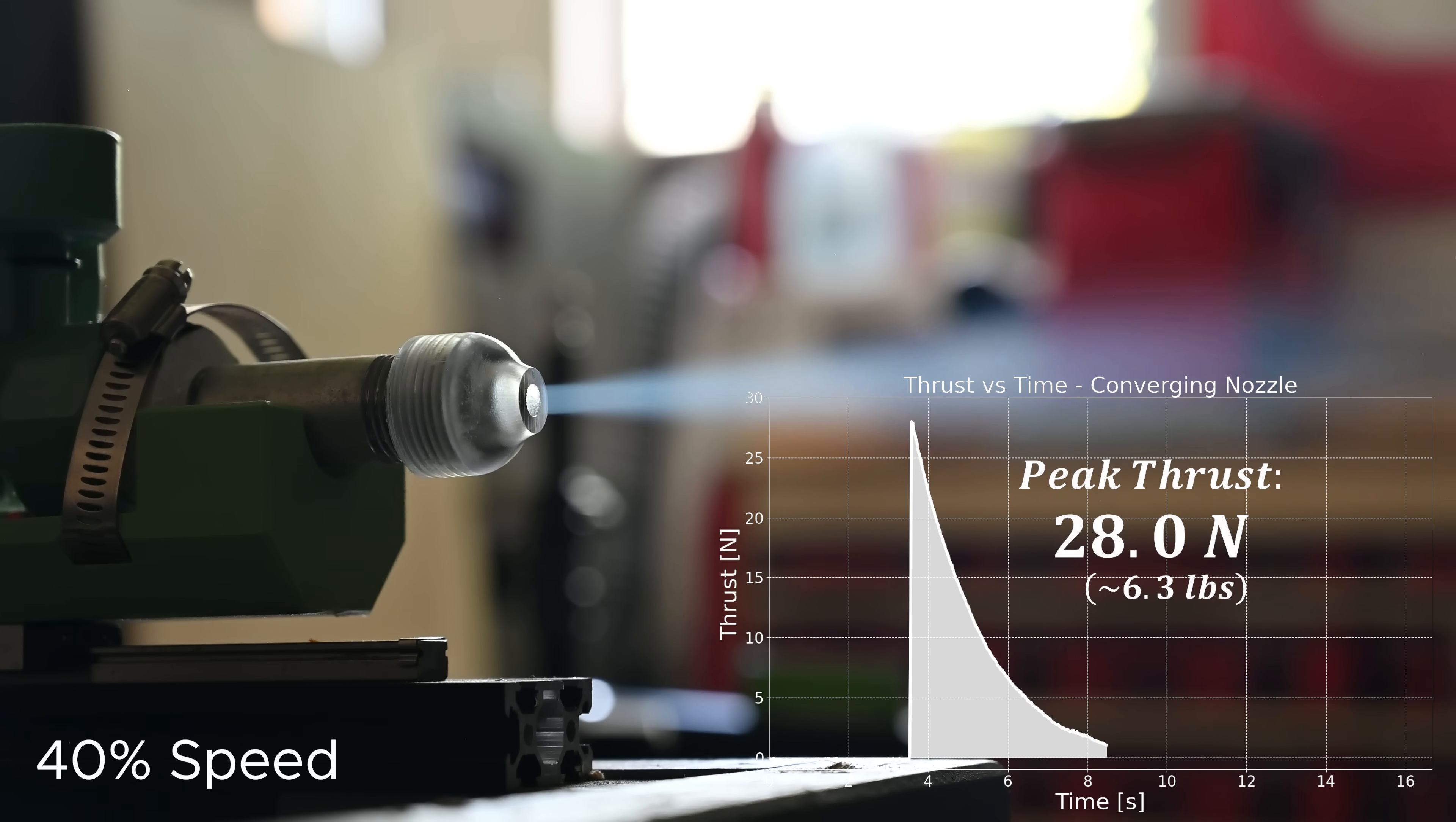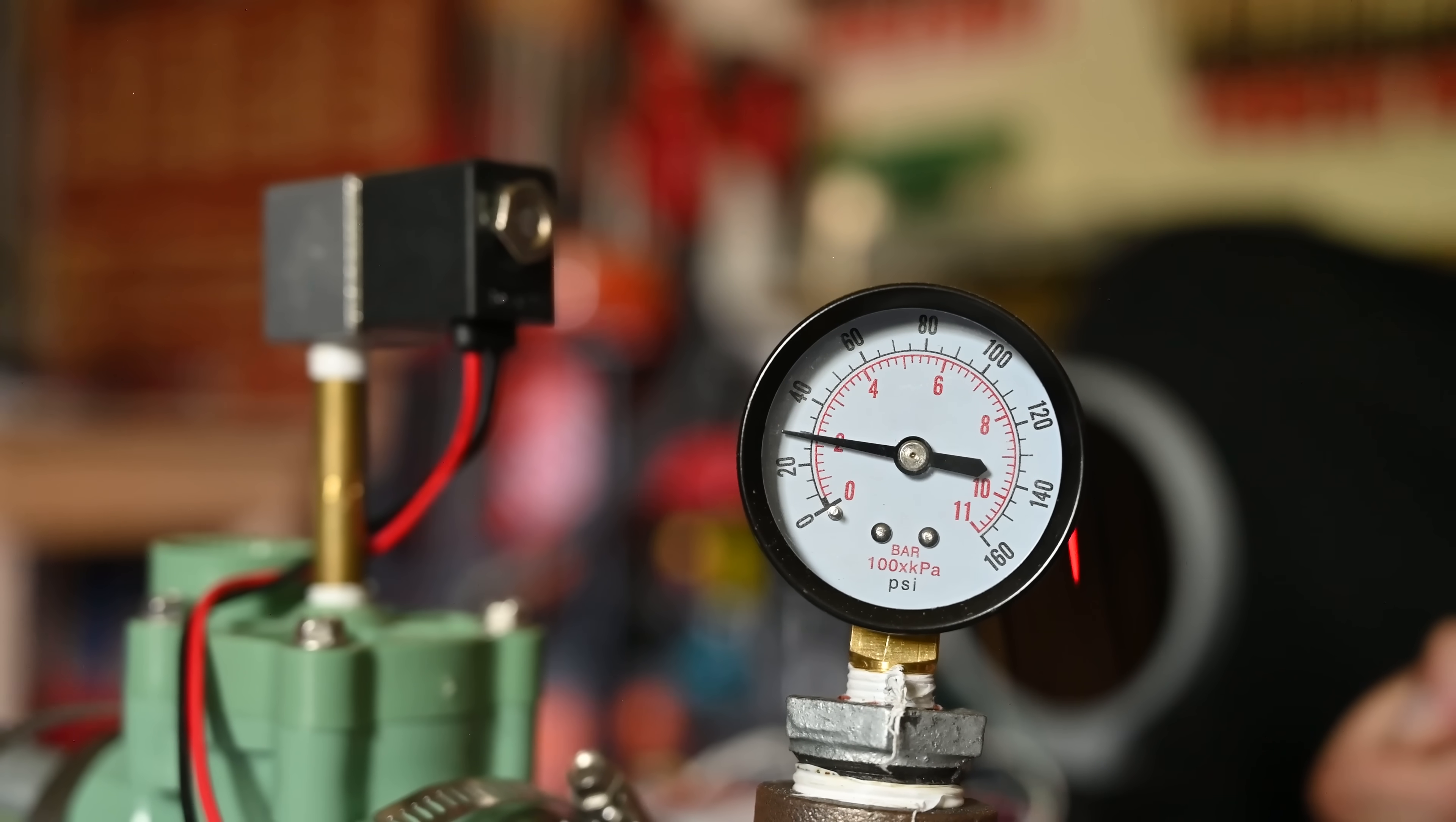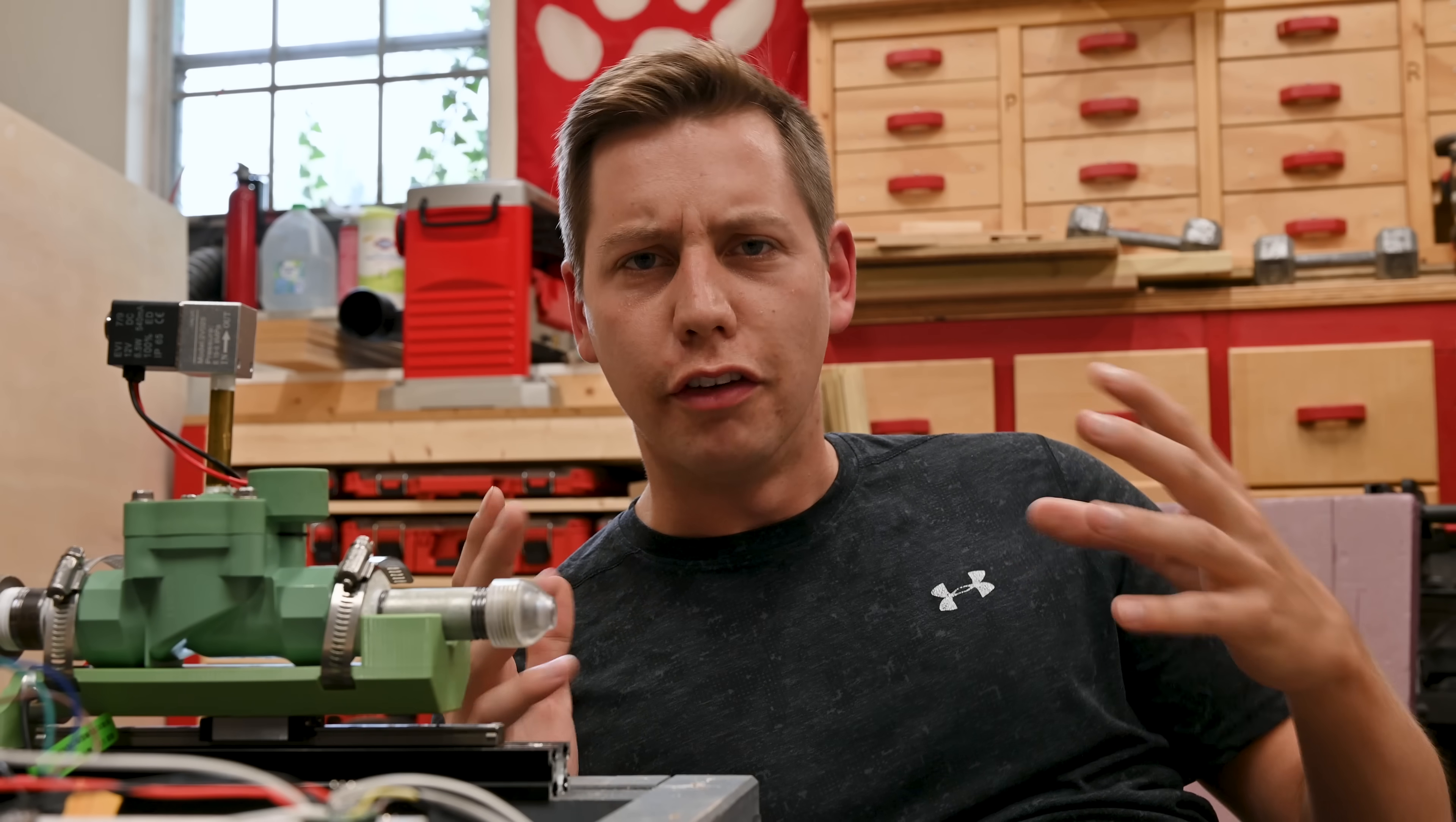Looking at the pressure gauge during the test, we can see that the pressure starts at 110 PSI, but when the valve opens, the air immediately starts moving towards the nozzle, which drops the static pressure to 100 PSI, and then it slowly ramps down until there's no remaining pressure left. Collecting data like this is great, but I really want to be able to visualize the flow.